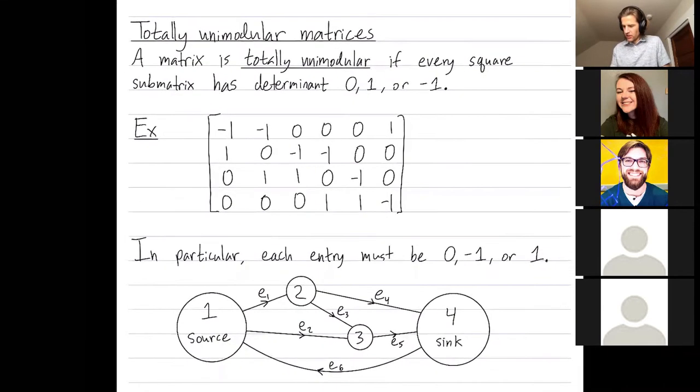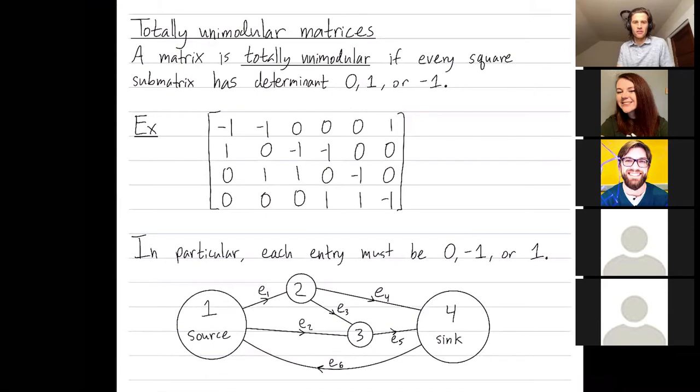So this particular matrix actually came from a max flow min cut problem. I have four vertices, one, two, three, and four. And then I have six edges.